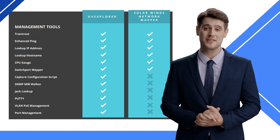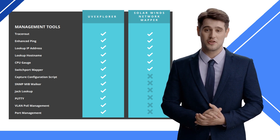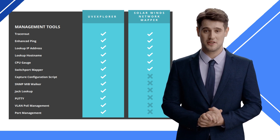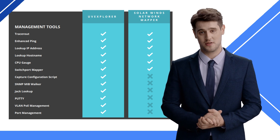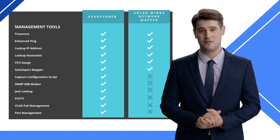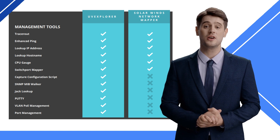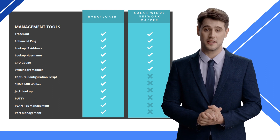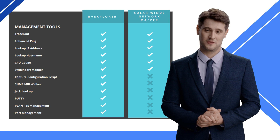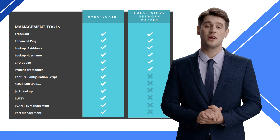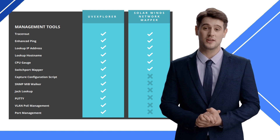One of the larger differences is the configuration backup feature in UV Explorer. SolarWinds NTM does not offer this feature at this time. The UV Explorer configuration backup will save your startup and running configurations from the router, switch, and firewalls, and will display the differences between configurations and notify IT admins of any changes to the configuration files.